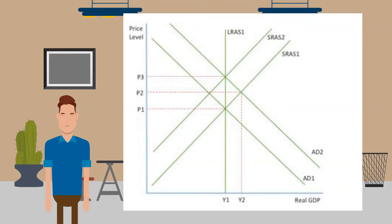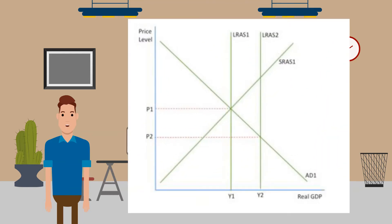As a result, short-run aggregate supply shifts to SRAS2 as the cost of production increases. Eventually the economy is producing the same amount but at higher prices — at Y1P3. Classicists conclude that an increase in aggregate demand will increase price and output in the short run, but over time prices will continue to rise as the economy returns to long-run equilibrium, so output has not changed. The only way to increase output is by increasing long-run aggregate supply. Changes in aggregate demand without a change in long-run aggregate supply are only inflationary. A rise in long-run aggregate supply from LRAS1 to LRAS2 causes lower prices and higher output, which is why classical economists favour supply-side policies over demand management.